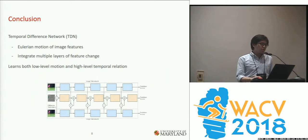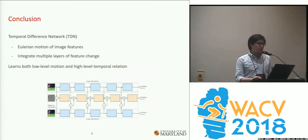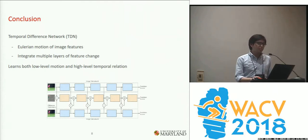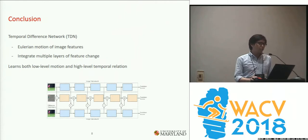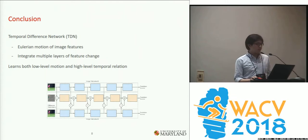To conclude, we propose the Temporal Difference Network, which is the Eulerian motion of image features. It is able to integrate multiple layers of feature change that can learn both low-level motion and high-level temporal relations within a single framework.